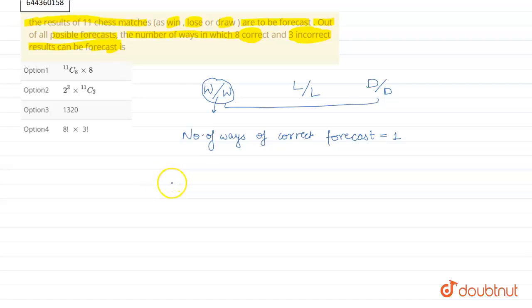We will find the number of ways of incorrect forecast. Now if a person says that the match will be a win, but it can be a draw or a lose, so there are two possibilities. Similarly, if he predicts that it is a lose, it can be a win or a draw. So number of ways of incorrect forecast equals to two.